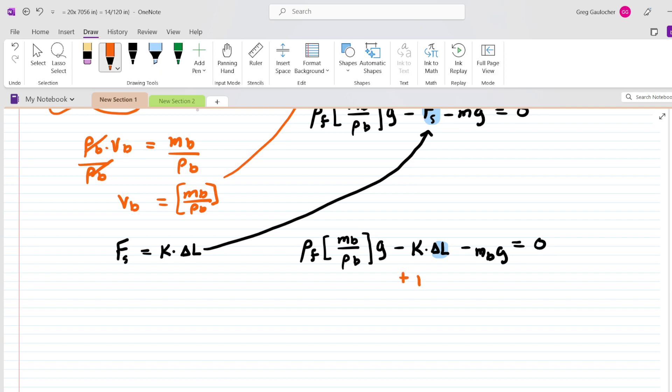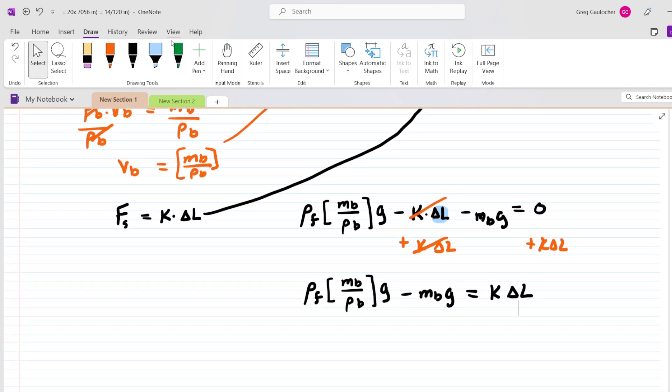To do that, we're going to add the term k delta L to both sides of this equation. And by doing that, the k delta L will cancel on the left-hand side. And then finally, to solve for delta L, we will divide both sides of this equation by the spring constant k, canceling the k's on the right-hand side.